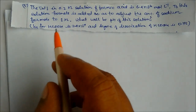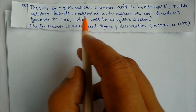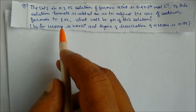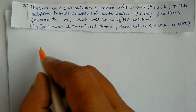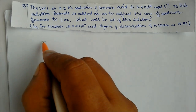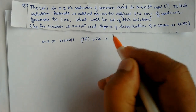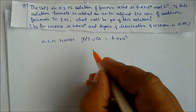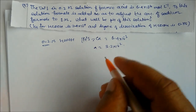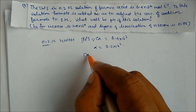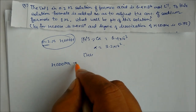Next problem: H⁺ in 0.2 molarity formic acid is 6.4×10⁻³ mol/L. Sodium formate is added to adjust its concentration to 1 molarity. Find the pH of this solution. First, find the degree of dissociation α: [H⁺] = c·α, so α = 6.4×10⁻³ / 0.2 = 3.2×10⁻². Formic acid concentration is 0.2 mol/L.